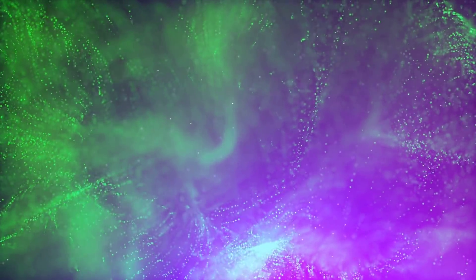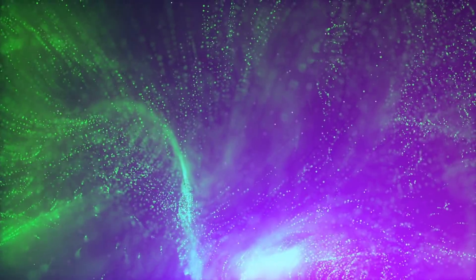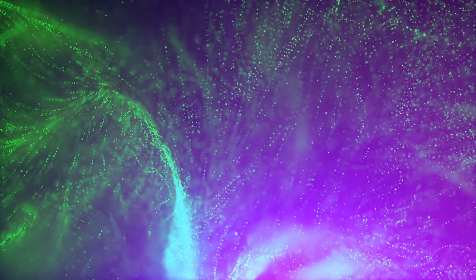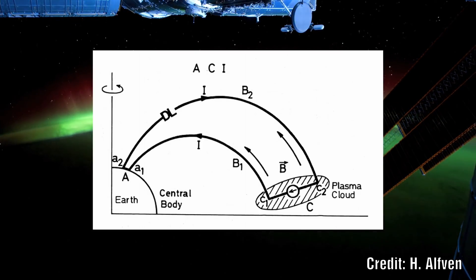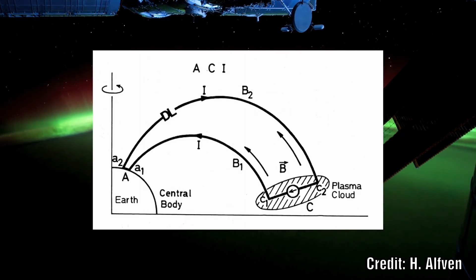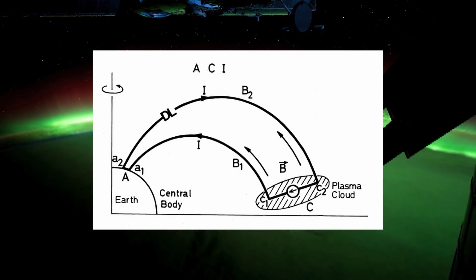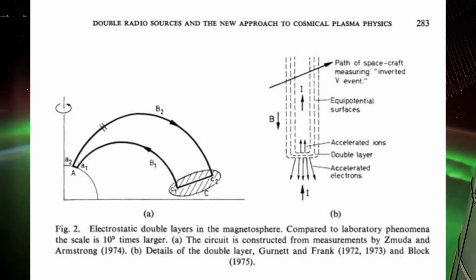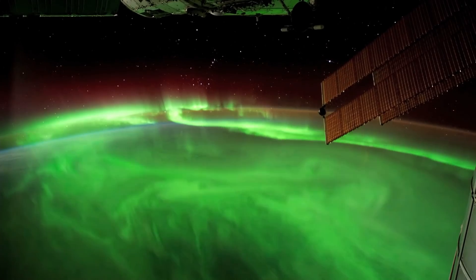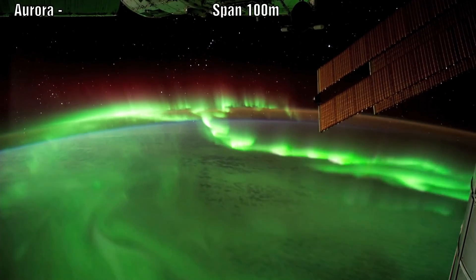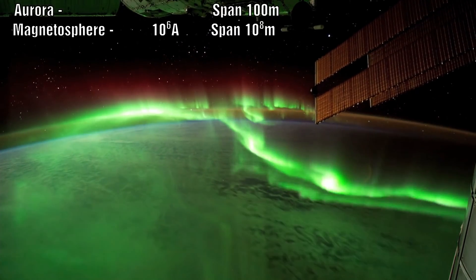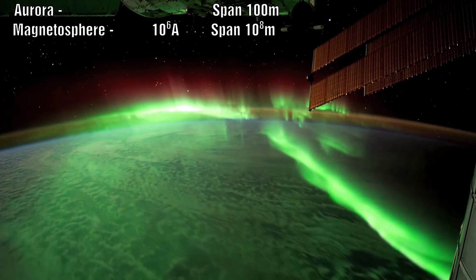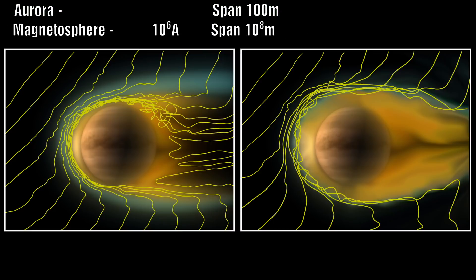Filamentary structures are found in the following cosmic plasmas, all associated with or likely associated with electric currents. In the aurora, filaments are often observed forming parallel to the magnetic field, with dimensions down to about 100 m. Inverted voltage events and in-situ measurements of strong electric fields in the magnetosphere demonstrate the existence of filamentary structures, which would carry a current between 10⁵ and 10⁶ A and span a distance of 10⁸ m.